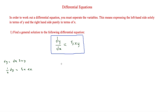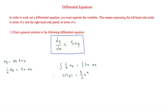So now we have to integrate both sides. We're going to be integrating 1 over y dy and also integrating 5x dx. So therefore we're going to get ln y — from our standard integrals we know that 1 over y integrates to ln y — and that is going to be equal to 5 over 2 x squared plus c.